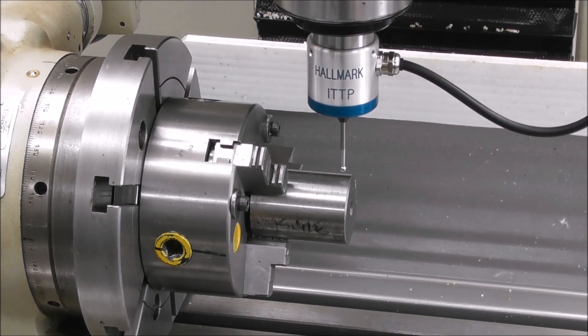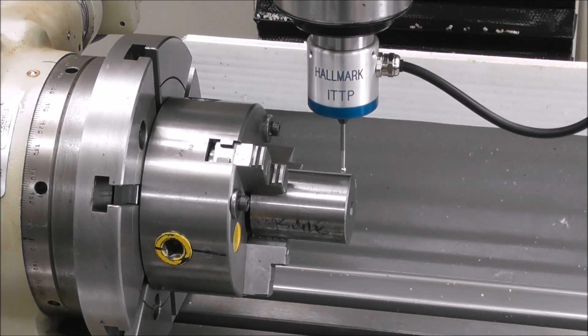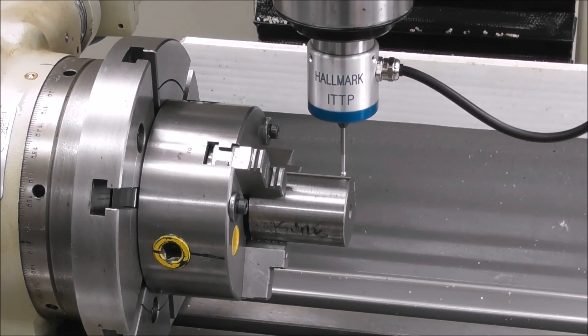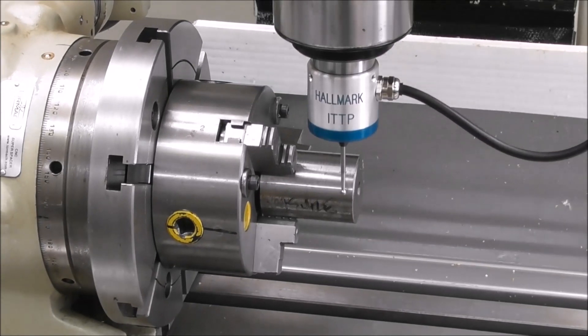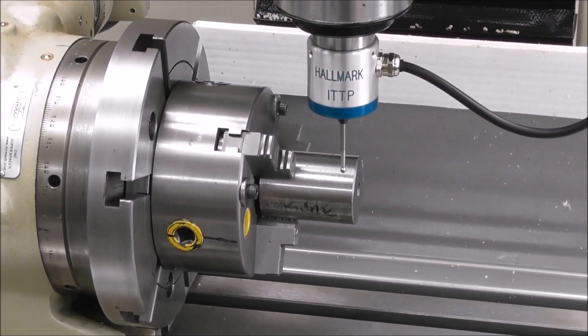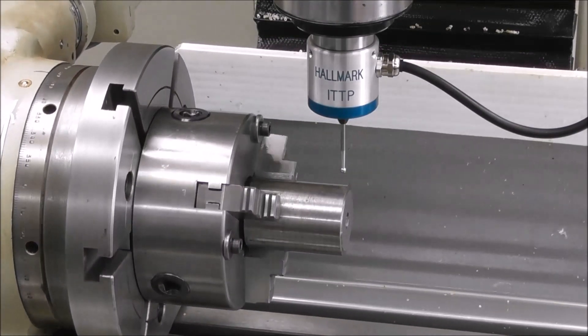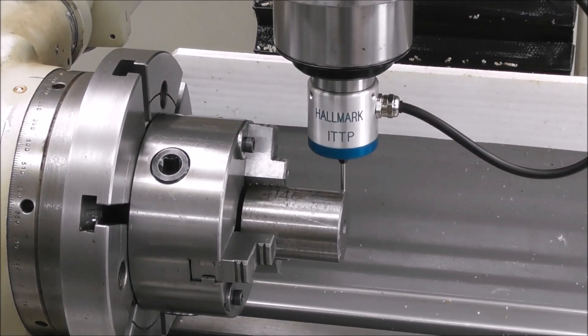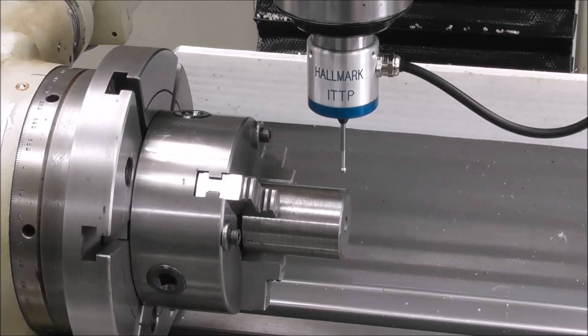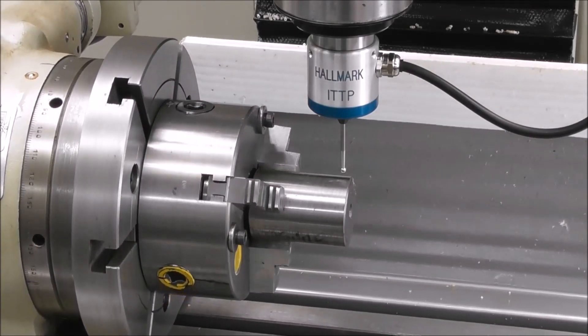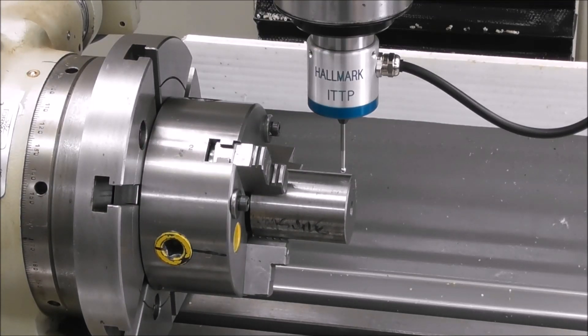So there you can see it's doing some vertical probes to establish the part diameter, then it's doing the math, then it's rapiding over and coming down to the Z center height and probing in the Y negative and Y positive and finding the center. So it's finding the center of the part in both the Z and the Y.